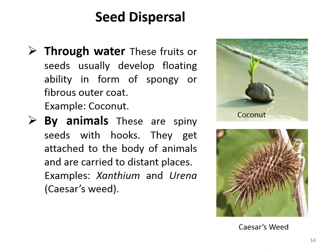There are different ways in which animals and birds disperse seeds. Some seeds are spiny with hooks — as seen in the picture — and get attached to the body of animals and are carried to distant places. Examples include Xanthium and similar species.